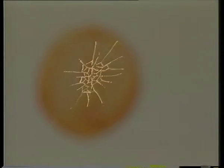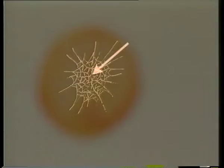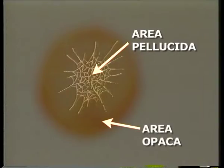After fertilization, the ovum undergoes cleavage, that is cell division, where cells — blastomeres — keep on dividing. The central part around the cleaving blastoderm becomes transparent. This area is known as area pellucida. The area on the periphery is opaque and known as area opaca.